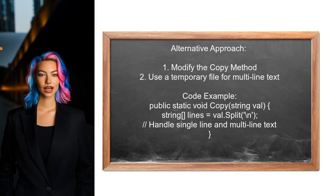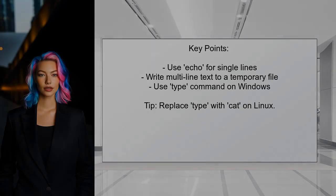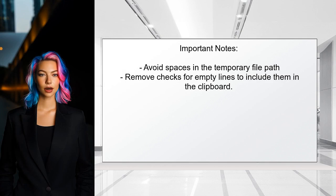An alternative solution for copying to the clipboard in .NET Core involves modifying the copy method to handle multi-line text. One user suggests using a temporary file to store the text lines before copying them. For single lines a simple command can be used, but for multiple lines they recommend writing to a temporary file and then using a command to copy the content. They note this solution is specific to Windows, and advise ensuring the temp file path contains no spaces.